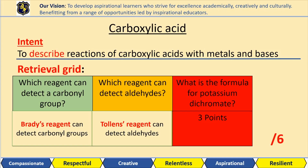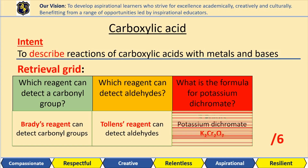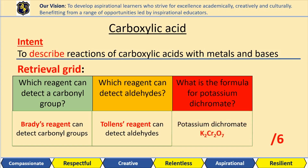And the last one: what is the formula for potassium dichromate? Potassium dichromate is K₂Cr₂O₇.